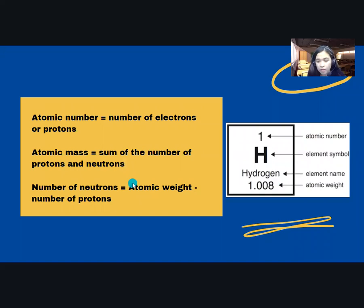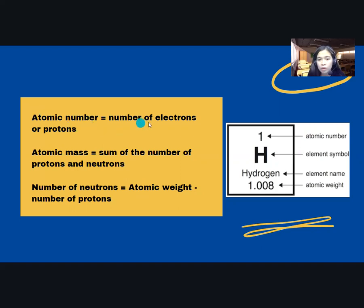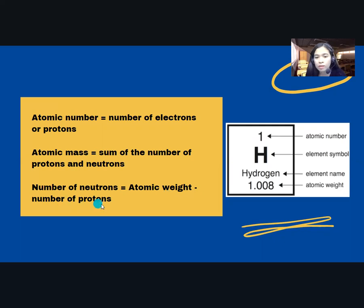We can determine the number of protons, neutrons, and electrons in an atom by looking at the information given in the table. The atomic number is equivalent to the number of electrons or protons. Atomic mass is the sum of the number of protons and neutrons, and the number of neutrons is the atomic weight minus the number of protons. So let's have an example.